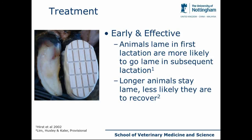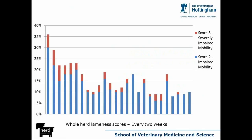Work we've just conducted at Nottingham, to be published soon, has demonstrated that the longer animals stay lame, the less likely they are to recover — very similar to the chronic high cell count cow. If they're not treated early and they stay lame, they are then much less likely to recover. It appears that if we don't treat these cows early, the disease gets more difficult to treat. We know that early and effective genuinely works — this is demonstrated by mobility score data from one of the five herds in our randomized controlled trial, which had just over 35% of cows identifiably lame on the day of first assessment.